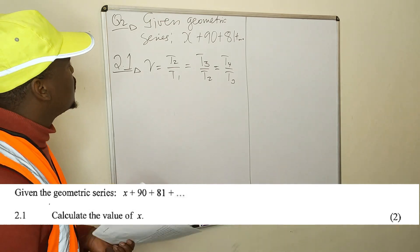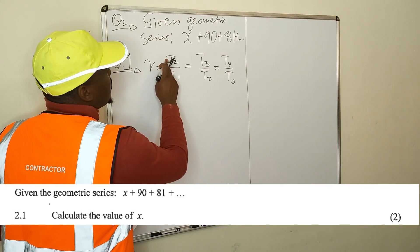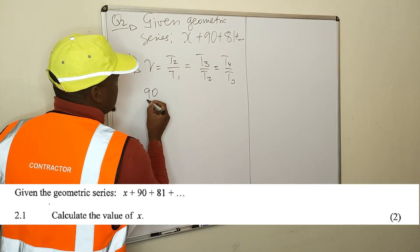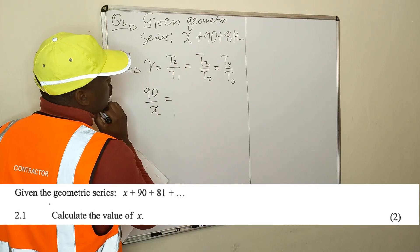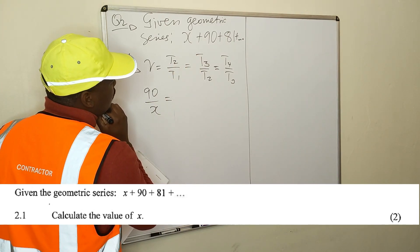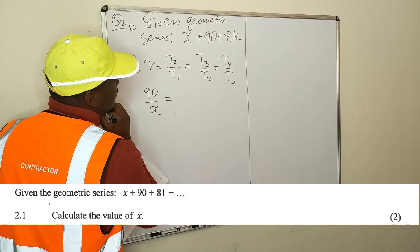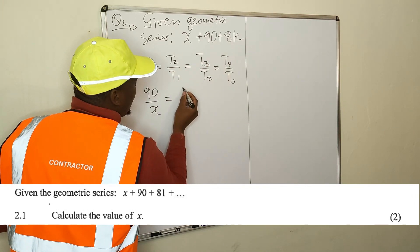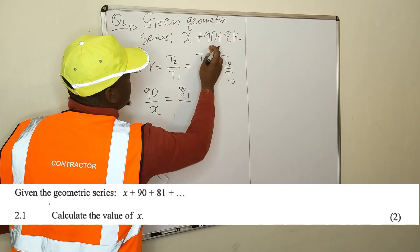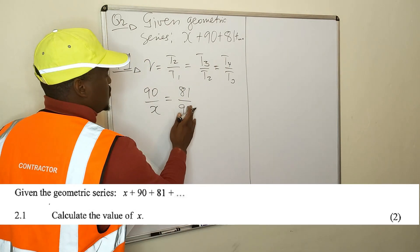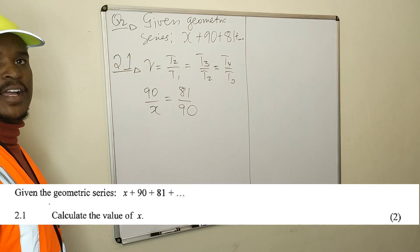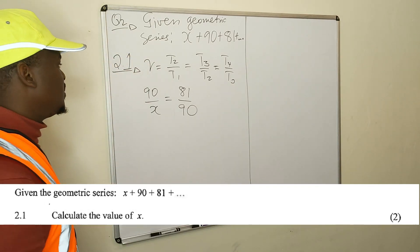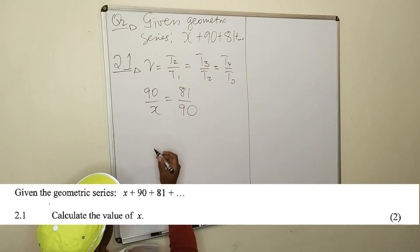Now I know what my term 2 is. My term 2 is 90 divided by term 1 which is x. This is equal to t3, my t3 is 81 divided by t2, my t2 is 90. And from here we solve for x. It shouldn't be difficult.